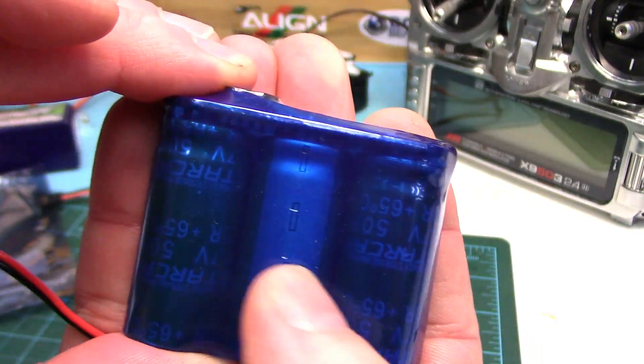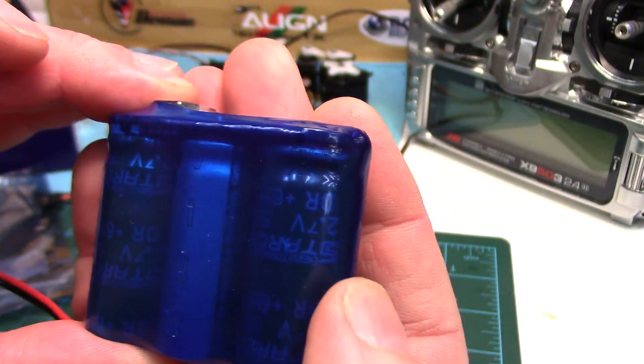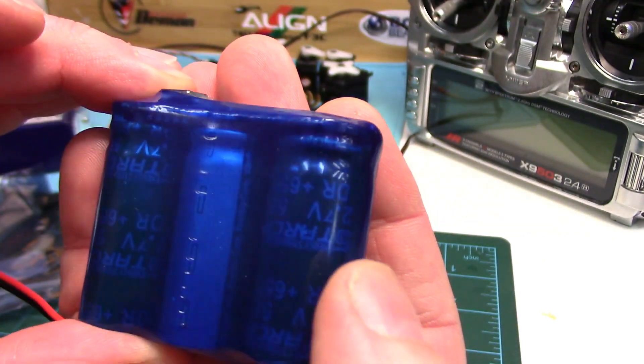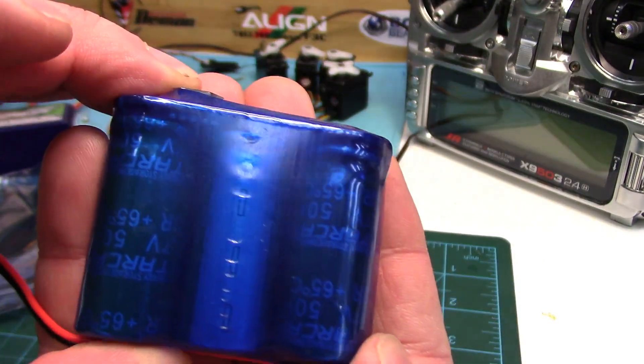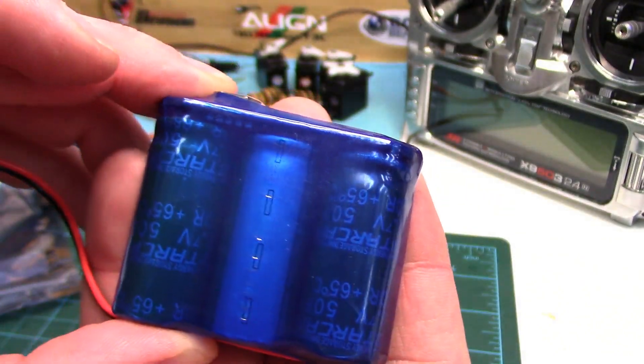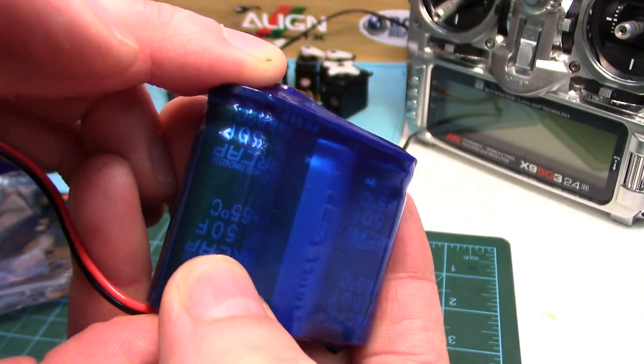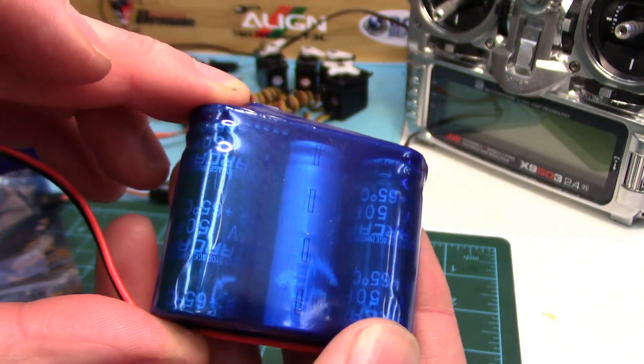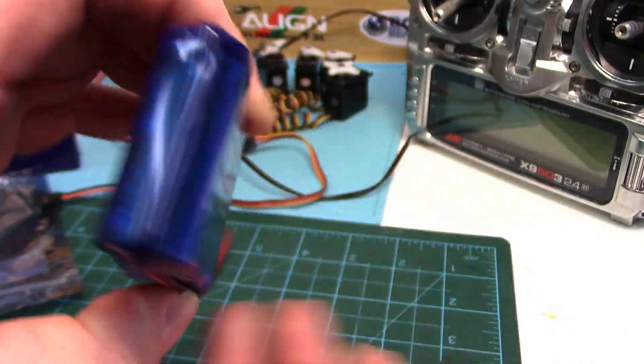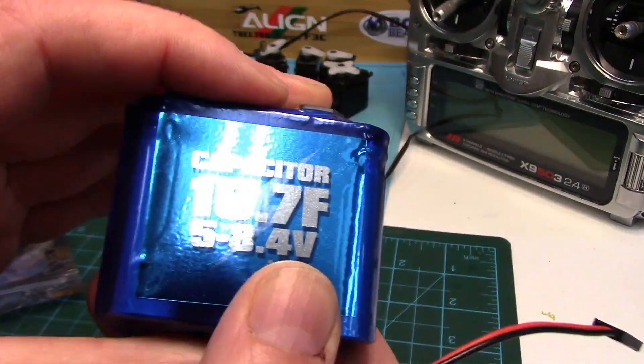I presume what they've done is hooked these in series, so we would add the voltages: 2.7 times 3 is 8.1 volts, but the capacitance is lowered. It's basically 50 divided by 3, so 16.666. They've just rounded it up to 16.7.